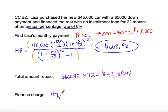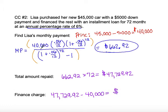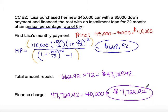She only borrowed $40,000, so on this much larger loan the bank earned $47,729.92 − $40,000.00 = $7,729.92 in finance charges and interest. You can see how significantly interest adds up on larger loans. Please take your time working through that formula carefully on the practice problems provided.